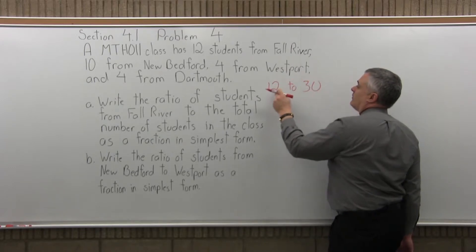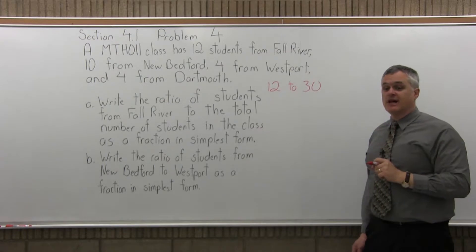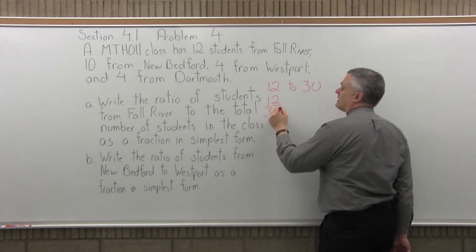So 12 from Fall River to 30 as a total of all the students in the class. As a fraction, that would be 12 over 30.